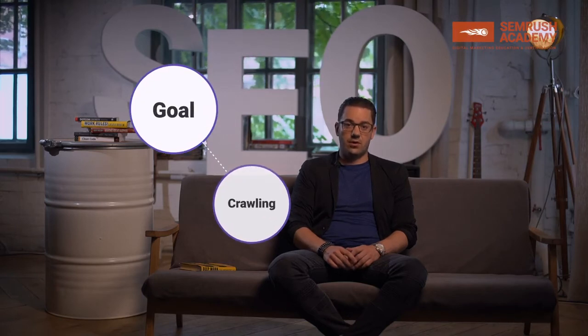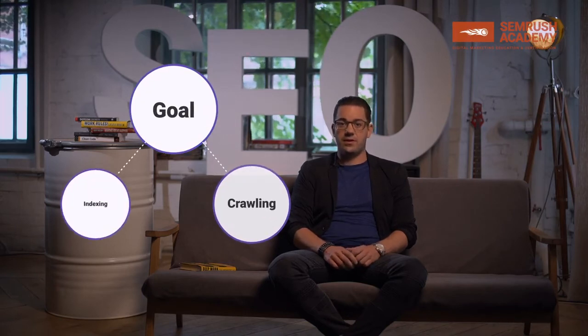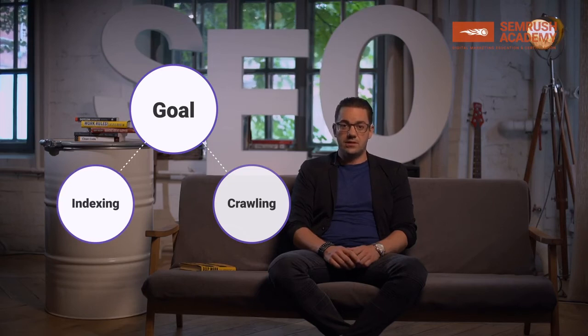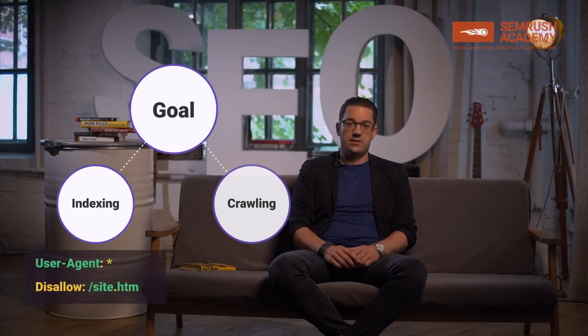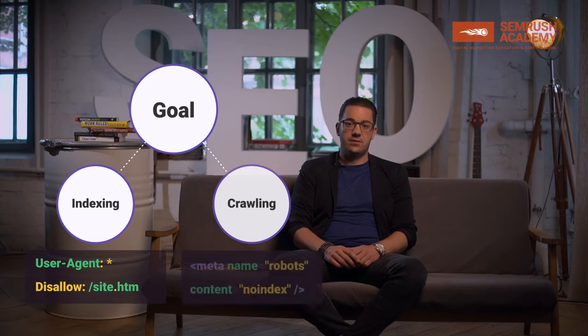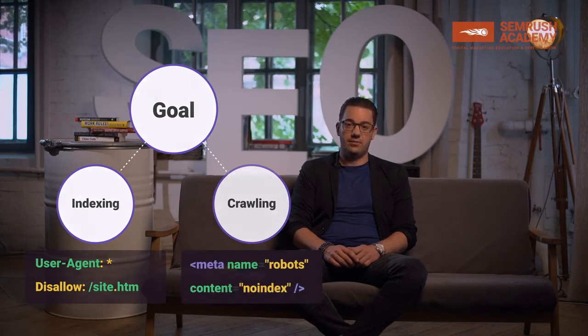First and foremost, it's important to define and understand what you want to achieve. Is it about crawling and crawl resources, or about indexation? If you want to reduce the number of URLs being indexed, then the meta robots tag with a noindex on those pages will be the right approach.